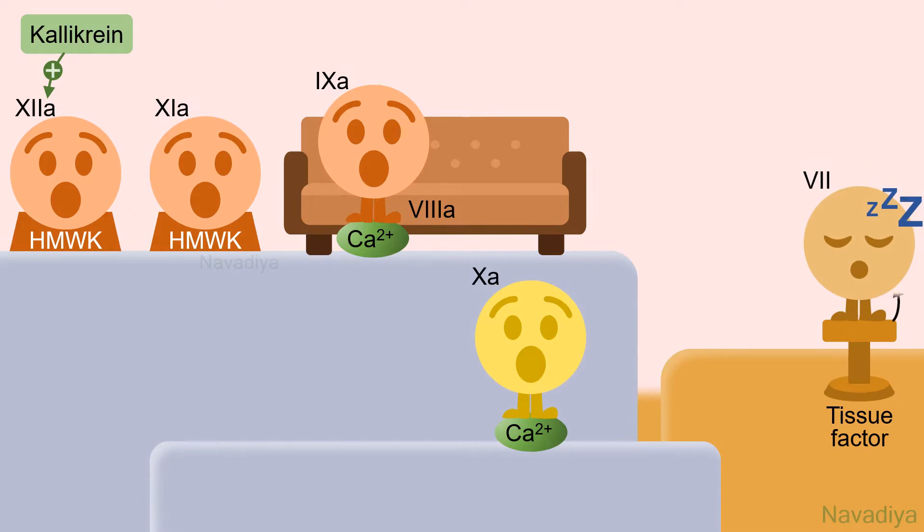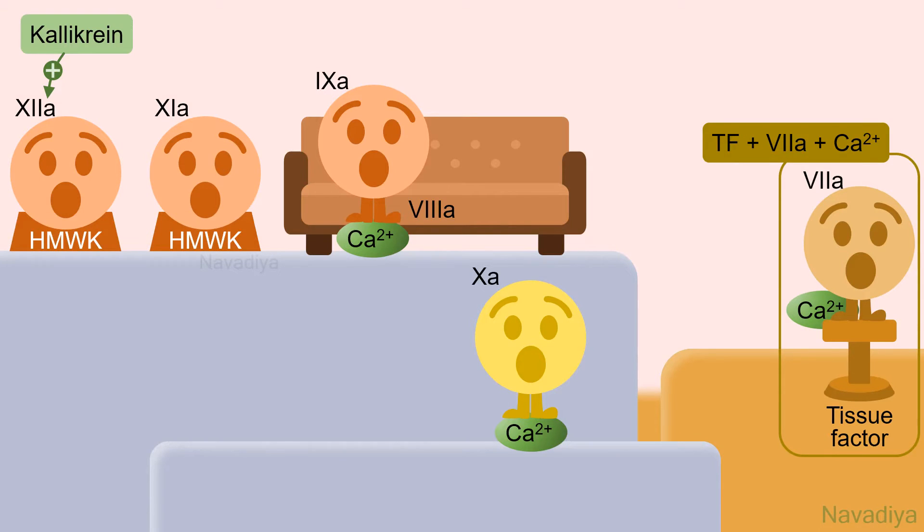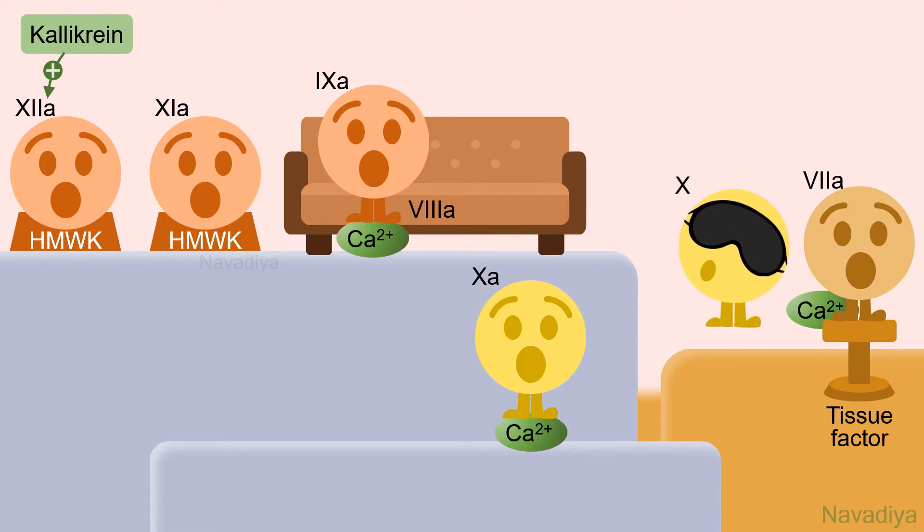Then tissue factor activates factor 7 in a non-proteolytic manner. They further associate with calcium and form tissue factor-factor 7a-calcium complex. It is similar to the tenase complex that we just saw. Like tenase, this complex also activates factor 10, which is the common end product of intrinsic and extrinsic pathways.